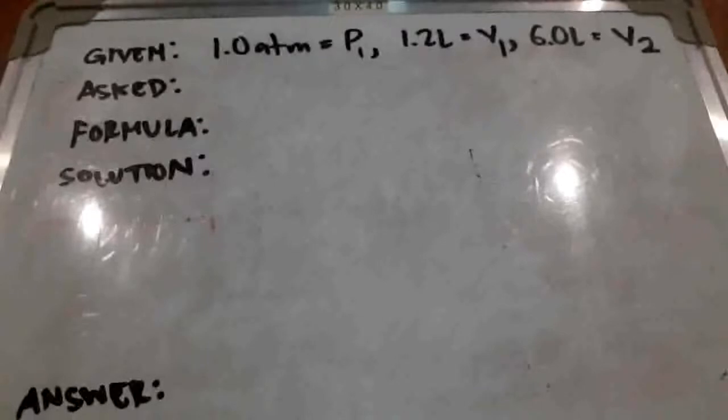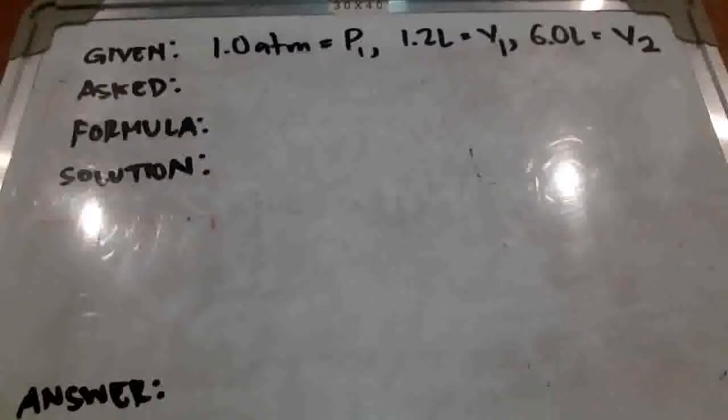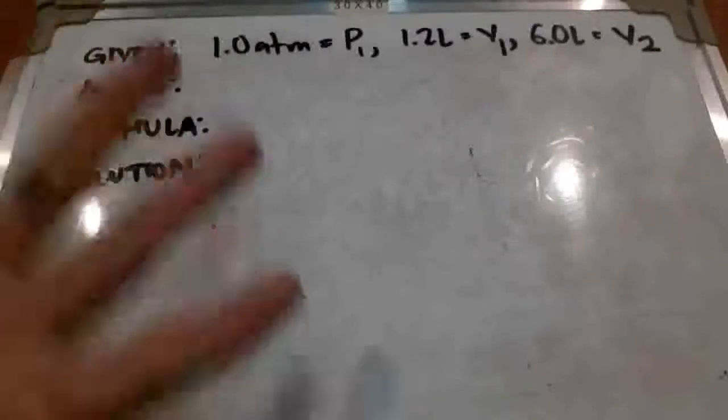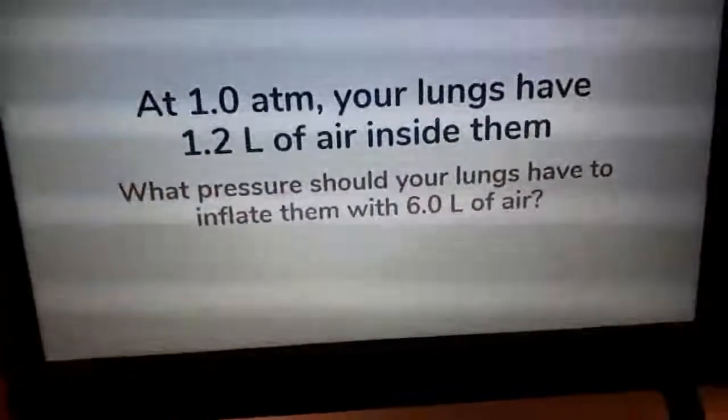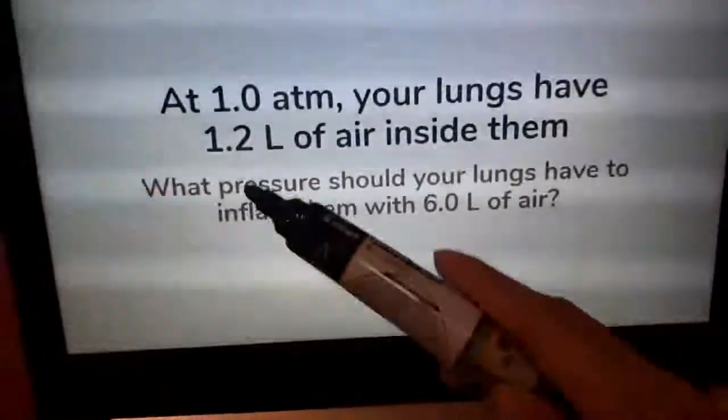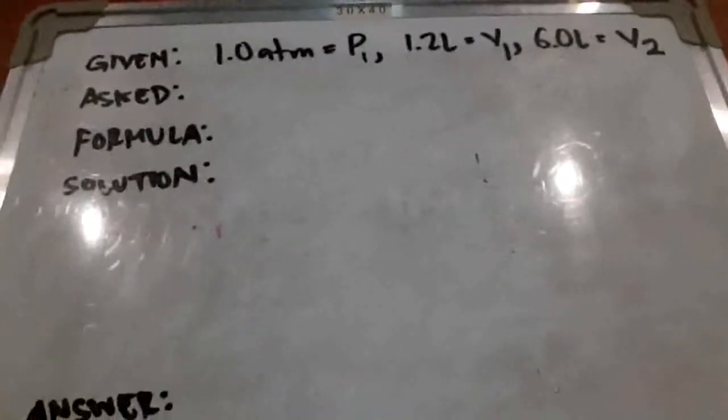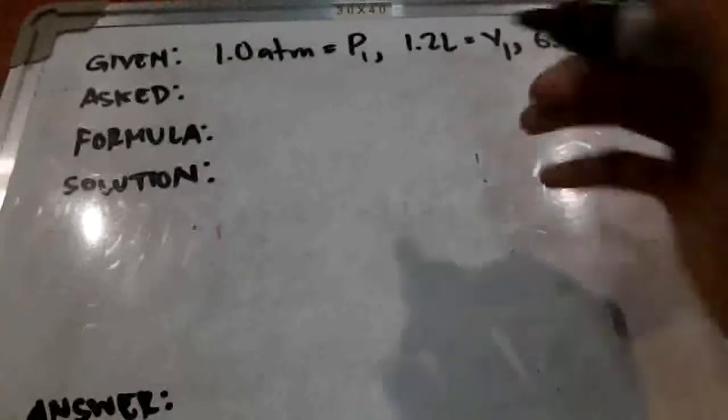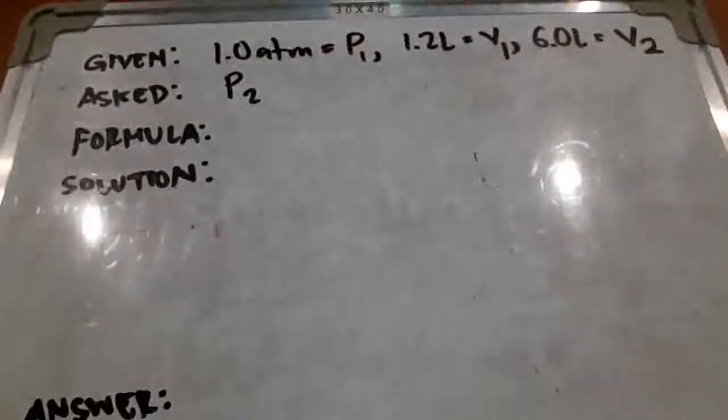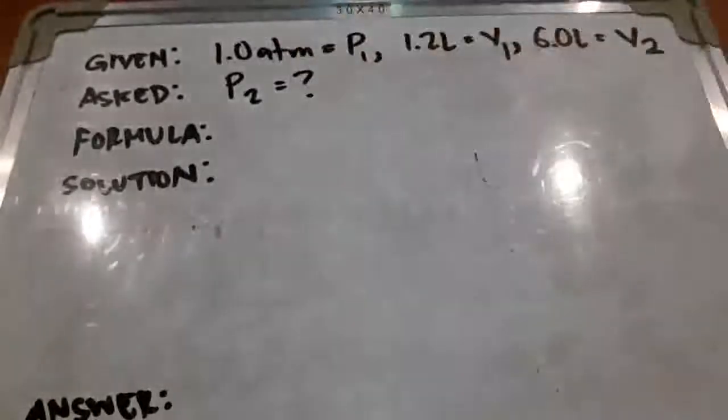Now, the reason why we're doing this, why we're getting the given, is so that we no longer have to read the problem over and over again. Once you have your given, once you have all the variables and the quantities that are given in the problem, you can focus on what's in front of you. Now, in the next step, the asked for step, we need to figure out what exactly they're asking for. What does the problem want from you? So going back to the problem, the question is, what pressure should your lungs have to inflate them with 6 liters of air? So we're looking for the pressure in the second situation. Again, when you have more air inside your lungs, what pressure do you expect inside your lungs? So you're asked for the pressure at the ending scenario.